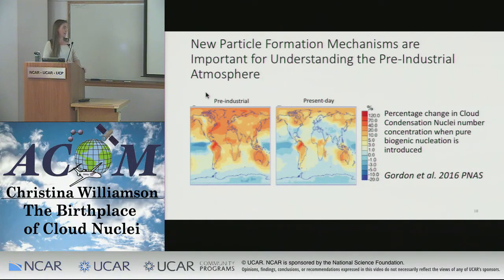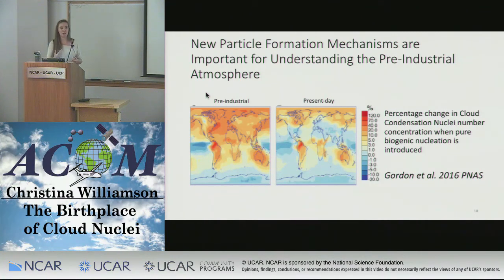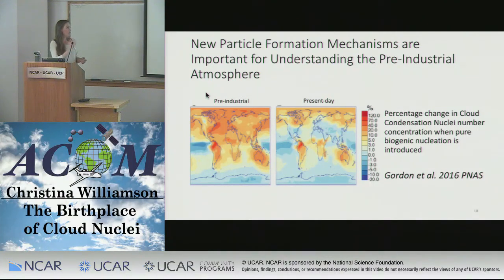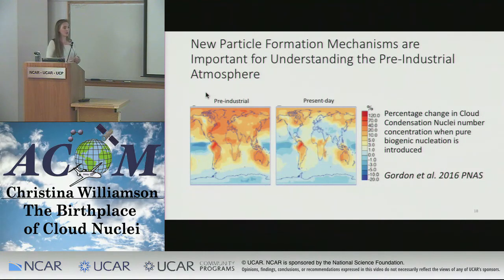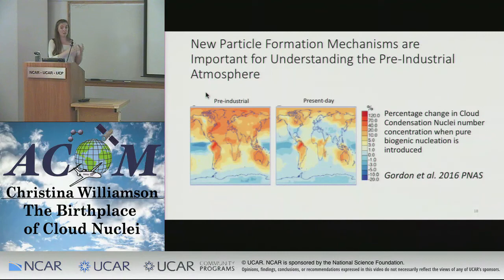This is nicely illustrated by a figure from Hamish Gordon's 2016 paper. They took a new nucleation mechanism — nucleation without sulfuric acid, involving just organic vapors — and put it into a global chemistry climate model with comprehensive new particle formation representation. They looked at the difference this made not to the number of small particles, but to the number of cloud condensation nuclei. In the present day it makes a difference, but in the pre-industrial the difference is way larger and more global in scale. This is why we care about new particle formation so much — if we're going backwards in our models to get radiative forcing, we want to get the new particle formation component correct.